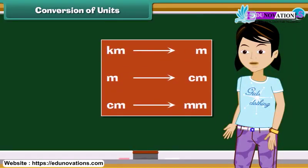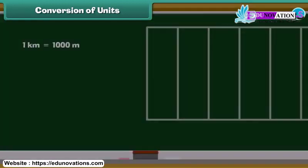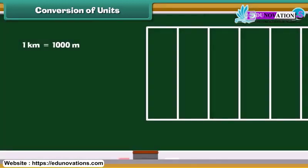Friends, let us now learn how to express distances given in one unit in other units. To measure distances smaller than a kilometer, one kilometer is divided into 1,000 equal parts, and each part is regarded as a unit. This is called a meter. We can say that one kilometer equals 1,000 meters.